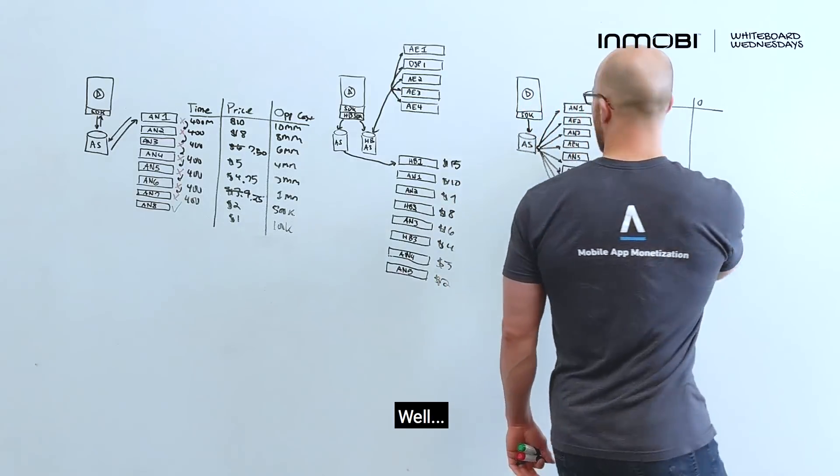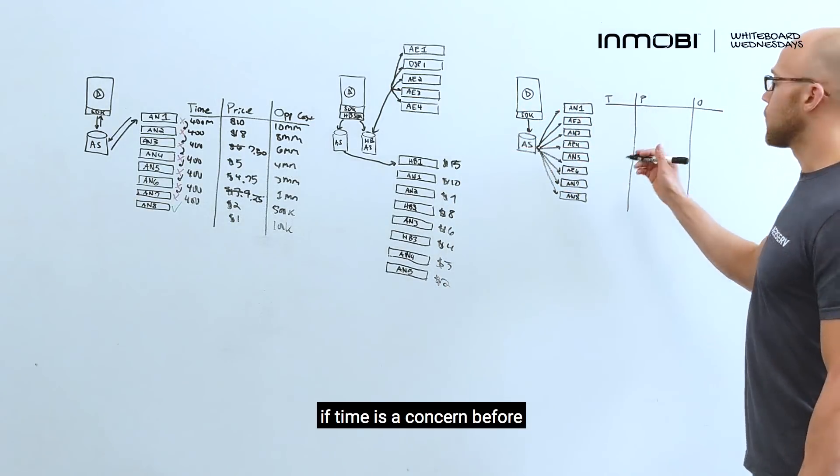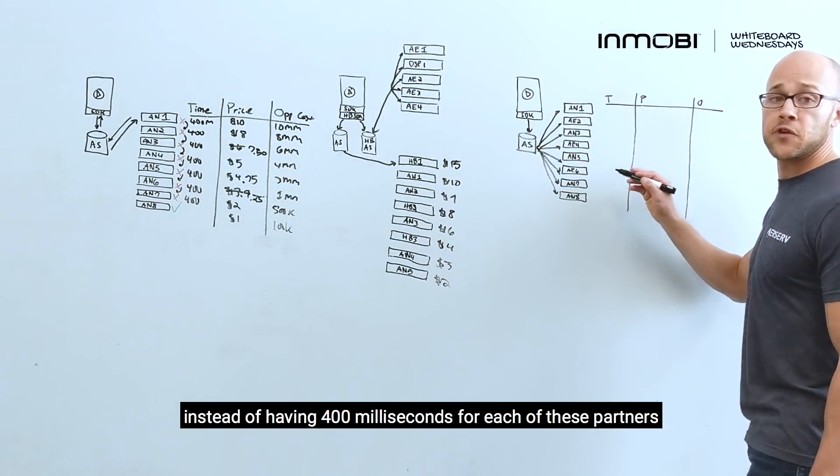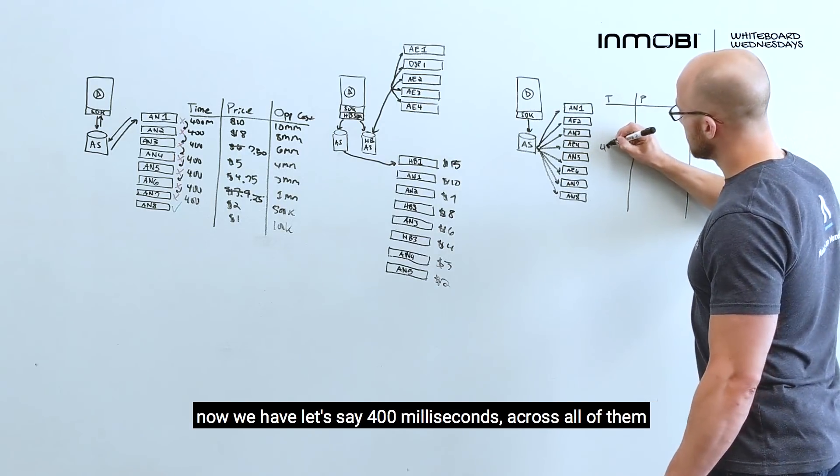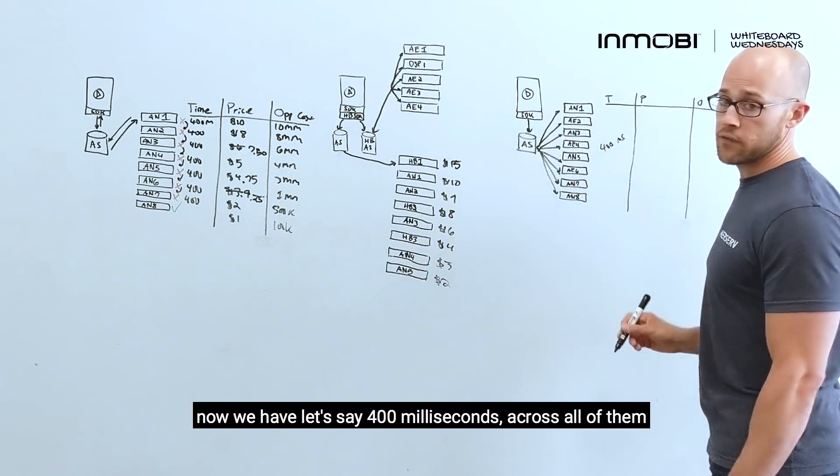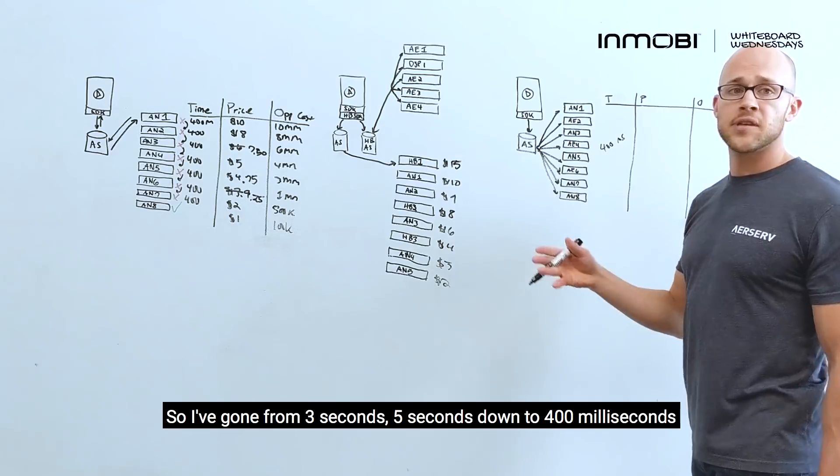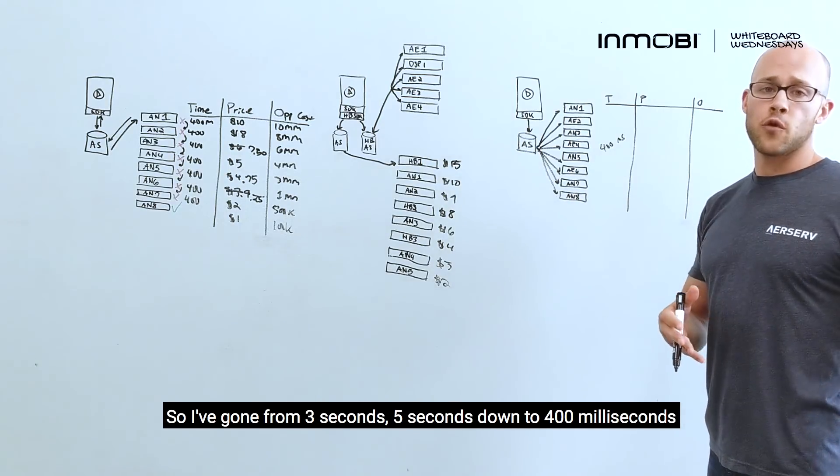Why is that important? Well, if time is a concern before, instead of having 400 milliseconds for each of these partners, now we have, let's say, 400 milliseconds across all of them. So, I've gone from three seconds, five seconds down to 400 milliseconds.